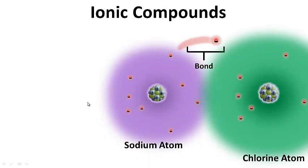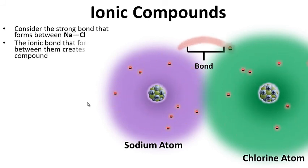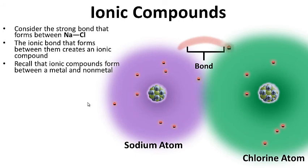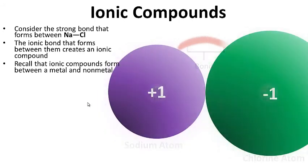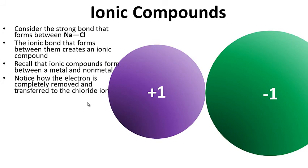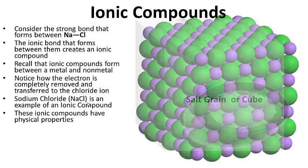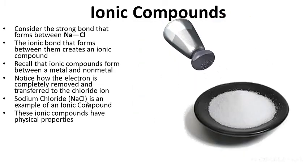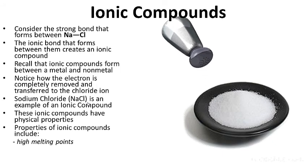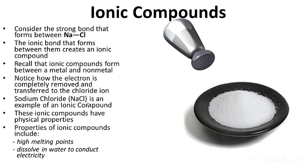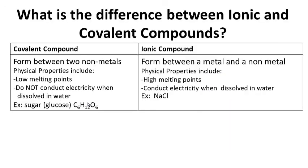Ionic compounds are a little different. Consider the strong bond that forms between sodium and chlorine — the ionic bond that forms creates an ionic compound. Recall that ionic compounds form between a metal and a non-metal. Notice how the electron is completely removed and transferred to the chloride ion. Sodium chloride is an example of an ionic compound. Properties of ionic compounds include high melting points — it takes a lot of heat to melt them — and they dissolve in water to conduct electricity. Examples include sodium chloride and sodium fluoride. What is the difference between ionic and covalent compounds? Question on the left-hand side, answer on the right-hand side.